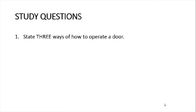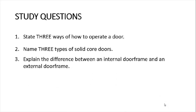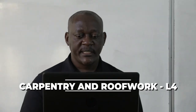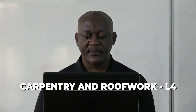Study questions: number one, state three ways of how to operate a door. Number two, name three types of solid core doors. Number three, explain the difference between an internal door frame and external door frame. Number four, list the six stages followed when installing a solid core panelled door. In our conclusion, let's go back to the earlier questions, which say: name the type of door made from the following materials.